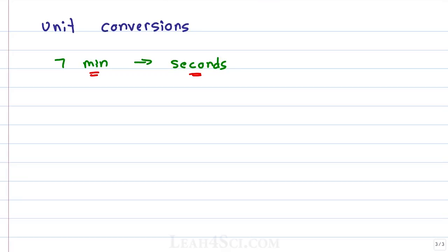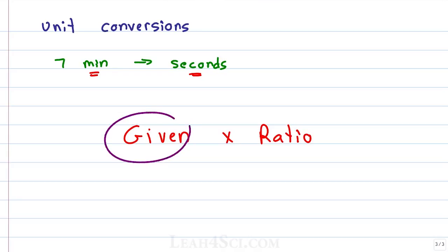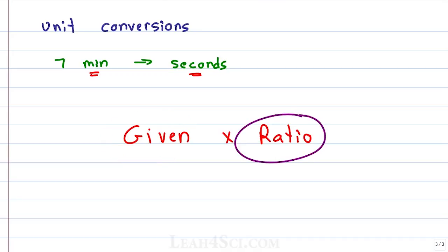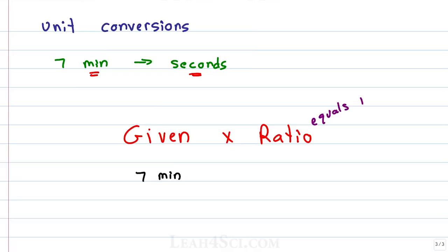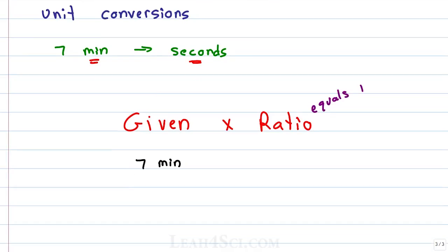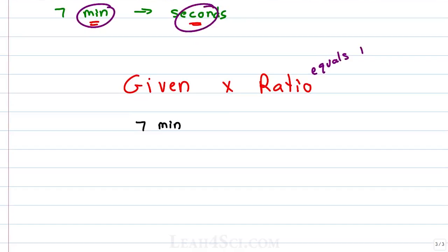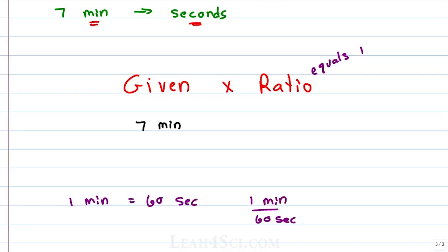You can forget all the equations you memorized and simply remember this one new equation: given times ratio. We are given a certain value and we need to convert it to another unit, so we need a ratio that equals 1. As long as that ratio equals 1, we can cancel out the units, do the obvious math, and convert the value. For 7 minutes going to seconds, we know 1 minute equals 60 seconds. We can write the ratio as 1 minute over 60 seconds, or as 60 seconds over 1 minute — both equal 1.